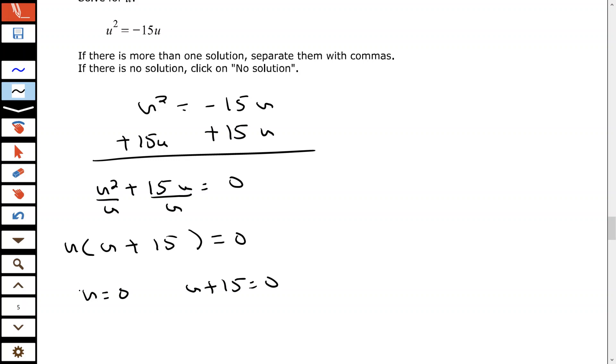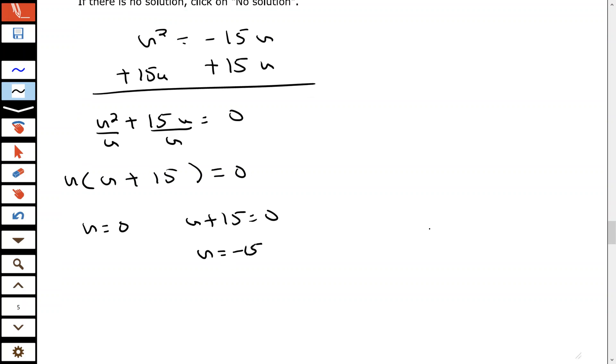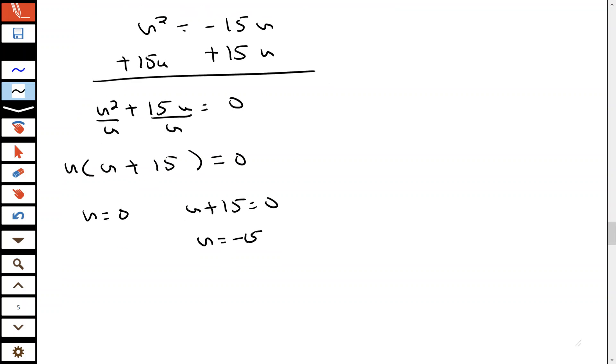So u equals zero, and then u plus 15 equals zero. So the only equation that we need to solve here is the u plus 15 equals zero by subtracting 15 from both sides. So the two answers are u equals zero or u equals negative 15.